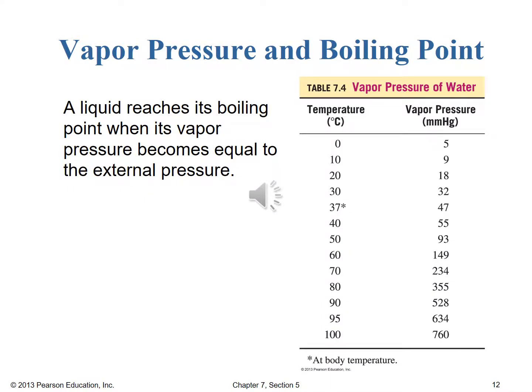In our course, we typically deal with water as our liquid. Table 7.4 in the text gives the vapor pressure of water at various temperatures. At 100 degrees Celsius, the vapor pressure of water is 760 mmHg, or one atmosphere — that's the temperature at which water reaches its boiling point. That 760 mmHg vapor pressure equals the external atmospheric pressure, so the gas can escape and boil off.